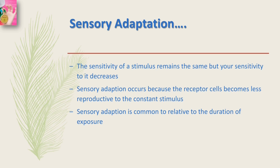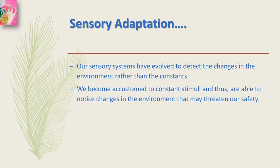Sensory adaptation occurs because the sensory receptor cells become less responsive to a constant stimulus. Adaptation is a feature common to all sensory systems, and it demonstrates that experiences of sensation are relative — relative to the duration of exposure. Our sensory system has evolved to detect changes in the environment rather than constants. We become accustomed to constant stimuli and are thus able to notice new or changing stimuli. We do not need to be constantly reminded of our clothes on our body, but we do need to know about changes in the environment that may threaten our safety.